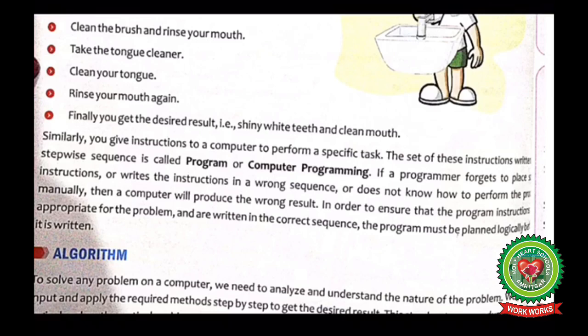Now, in the similar way, we can give instructions to the computer to perform specific tasks. The set of these instructions that is written in sequence and that we give to the computer is called program or computer programming. Now, if a programmer doesn't know how to write the instruction in a correct form or writes the wrong sequence of the instruction or doesn't know how to perform it manually, then computer will produce wrong result. So to ensure that the instructions are written in a correct sequence, a programmer must plan it logically before it is written.